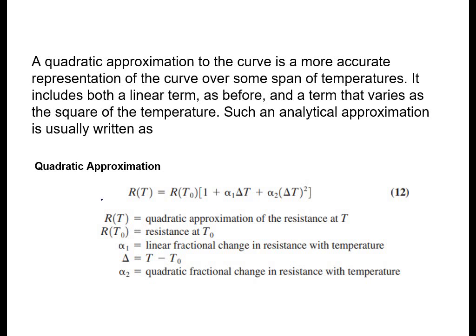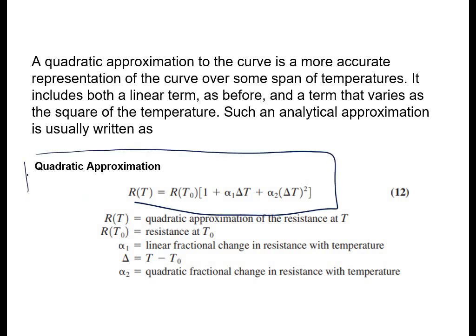If you don't want to use a straight line equation and want to use a quadratic one, the equation is R = R0 · (1 + α1 · ΔT + α2 · ΔT²). Here R at T0 is simply R0 — it is not multiplied by T0. Alpha1 is the same alpha we already have an equation for, and alpha2 can be found to complete the equation. Delta T is T − T0.